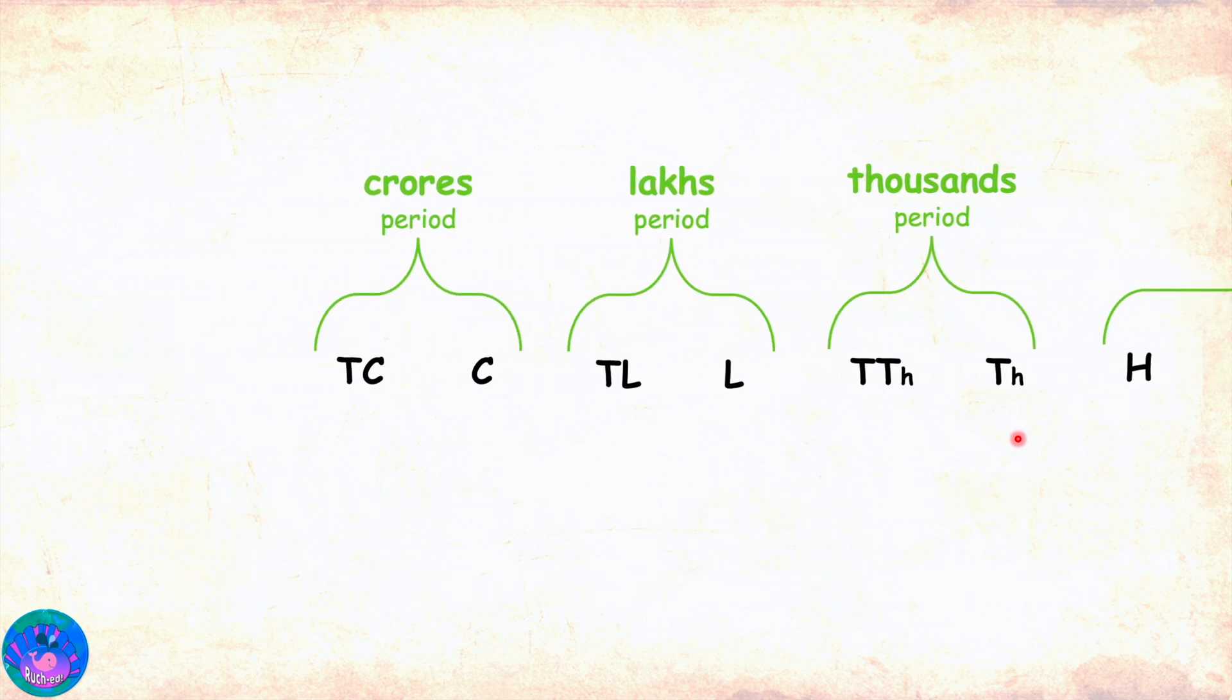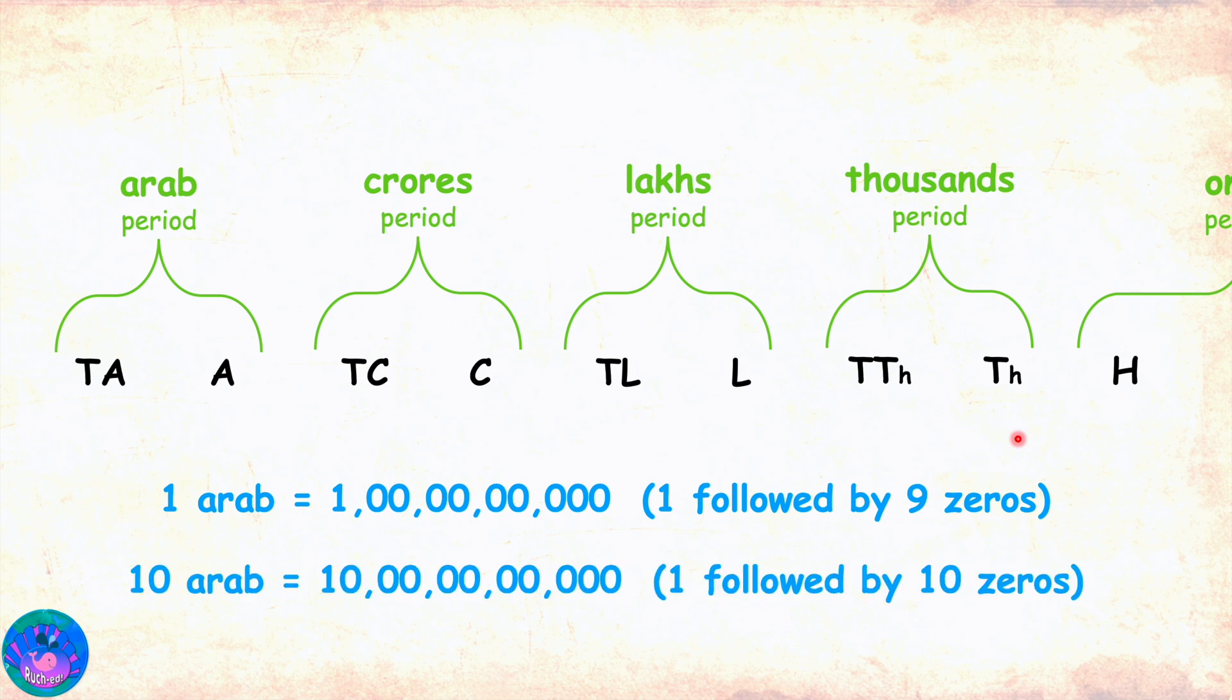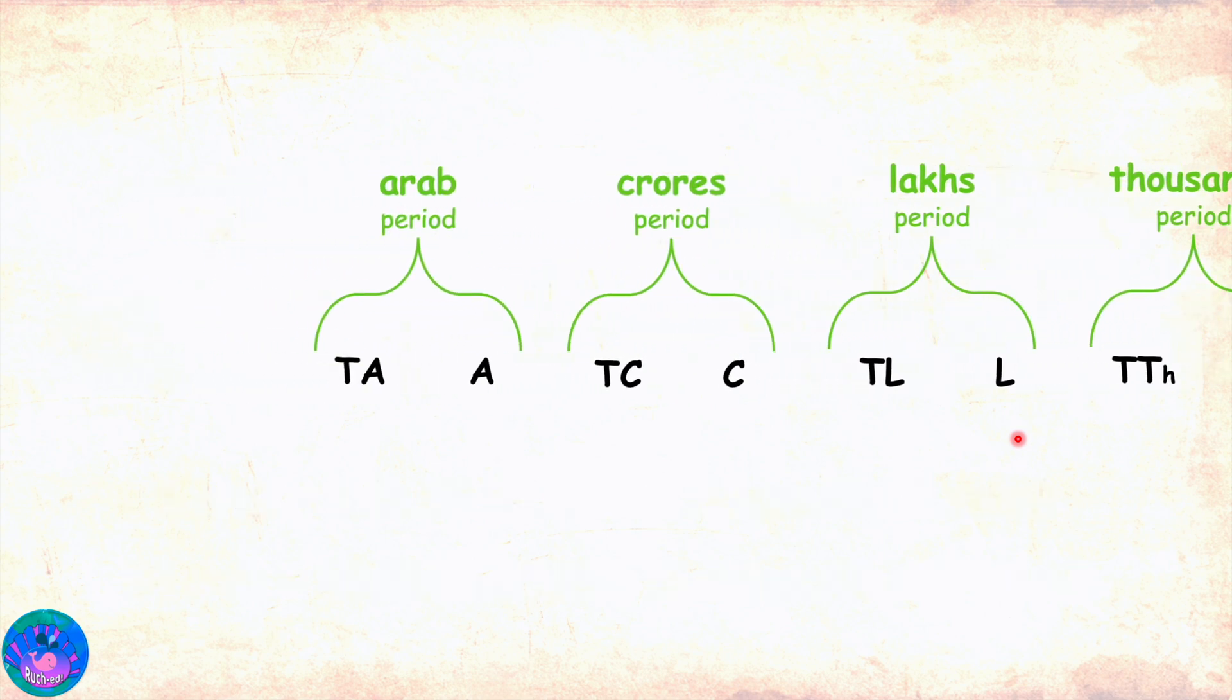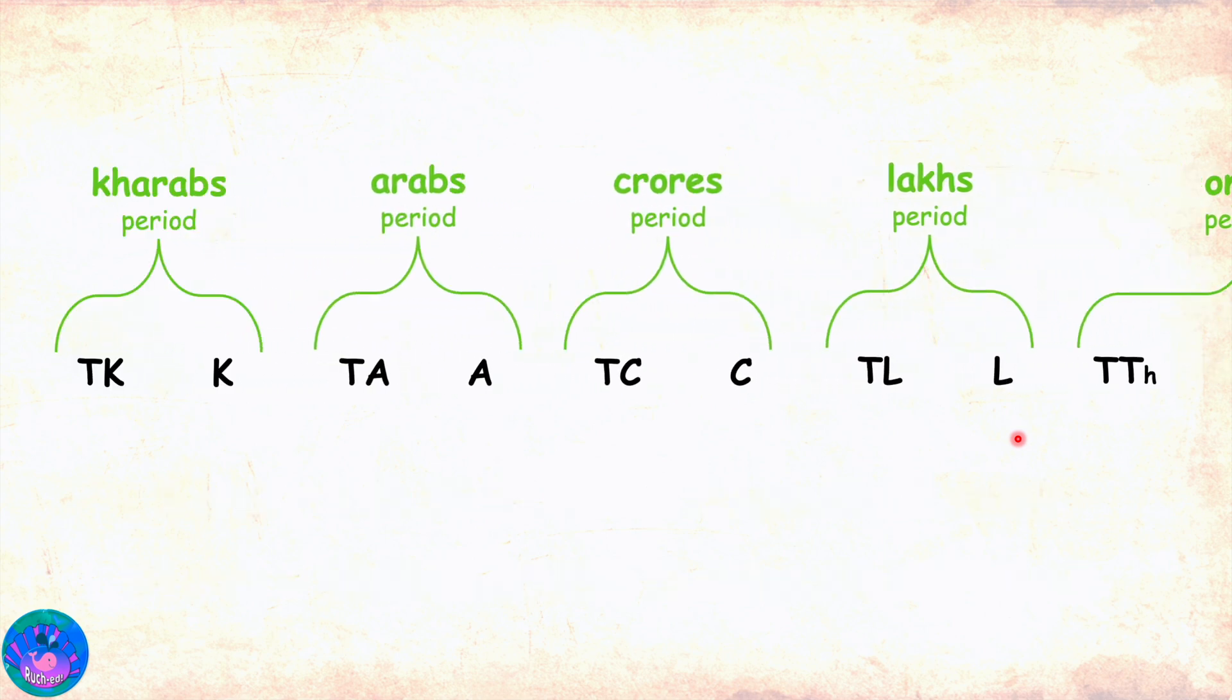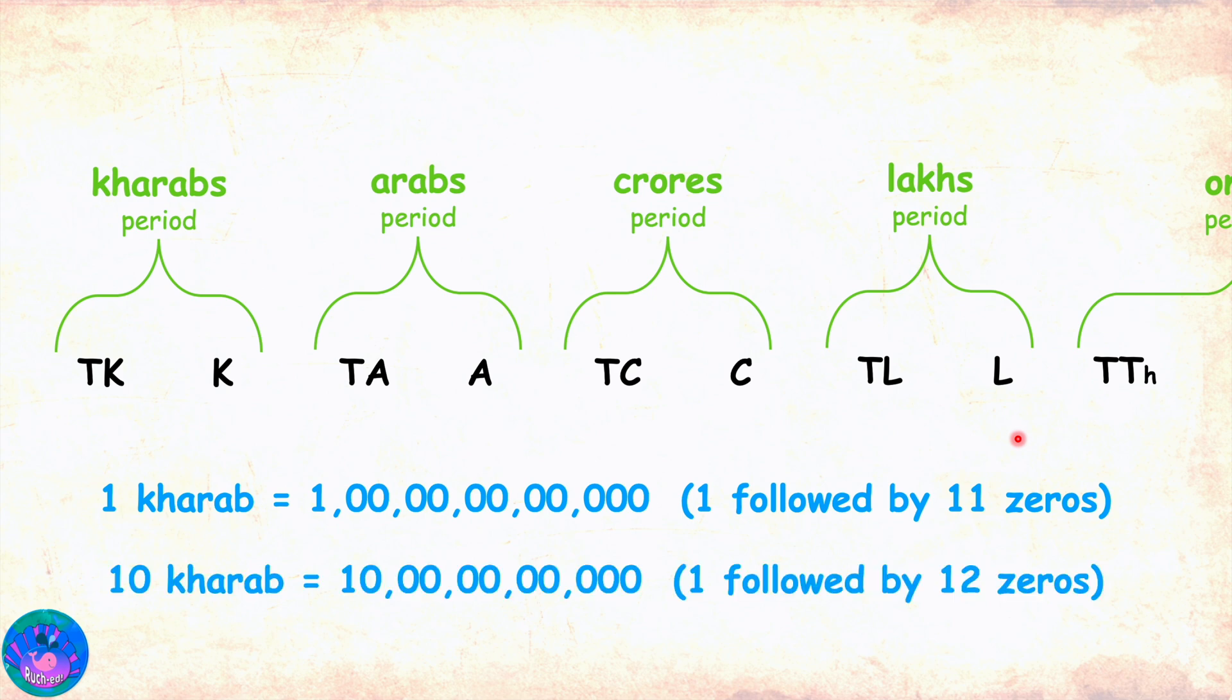After that, we have the Arab period, which comprises of Arab and ten Arab places. One Arab is one followed by nine zeros and ten Arab is one followed by ten zeros. After that, we have the Carib period, comprising of Carib and ten Carib number places. One Carib is one followed by eleven zeros and ten Carib is one followed by twelve zeros and so on.